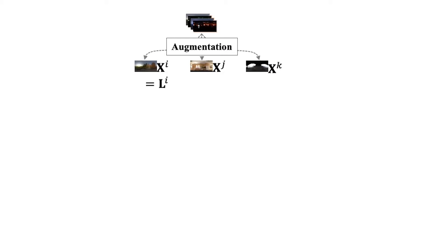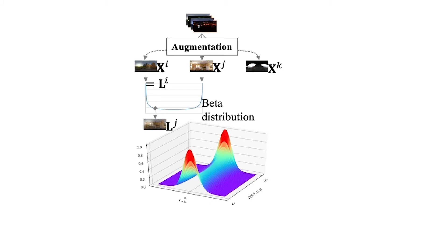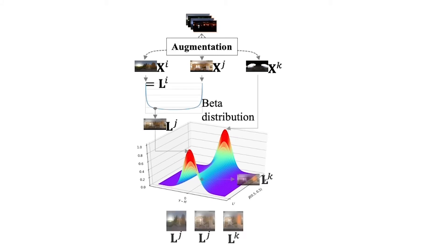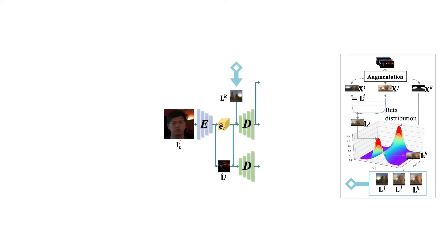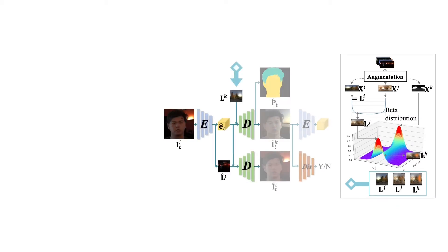In our pipeline, we adopt the beta distribution, drastically diversifying the lighting combination to model the illumination consistency and mutation simultaneously and enhance our network's generalization ability. Then, based on the U-Net structure, we adapted GAN, self-supervision and face parsing to enhance the disentanglement.